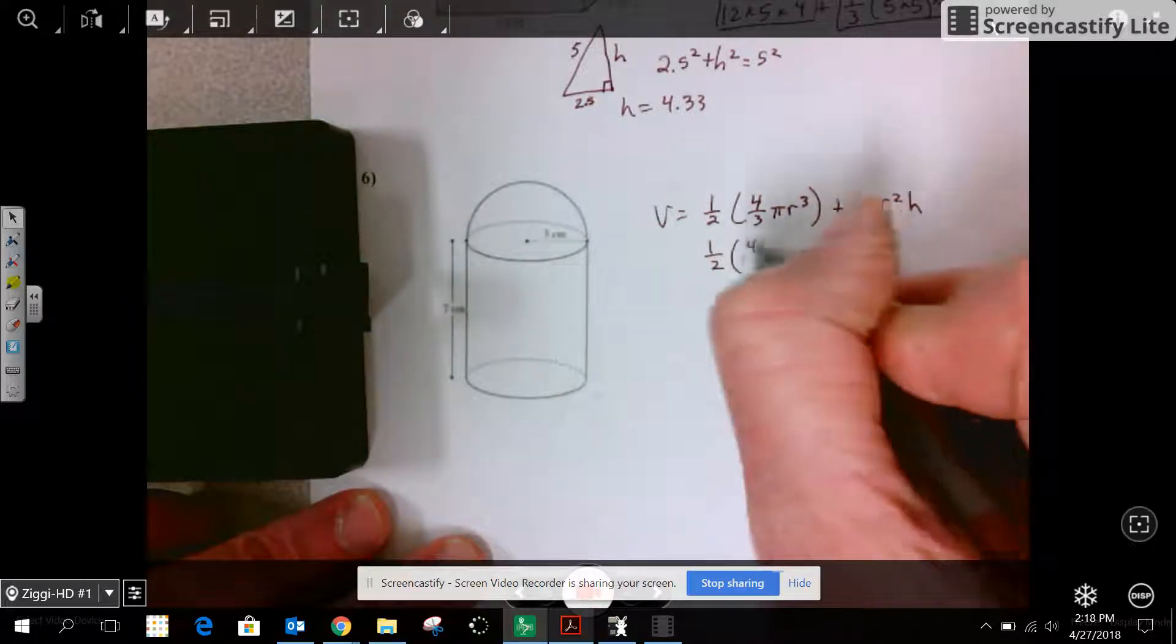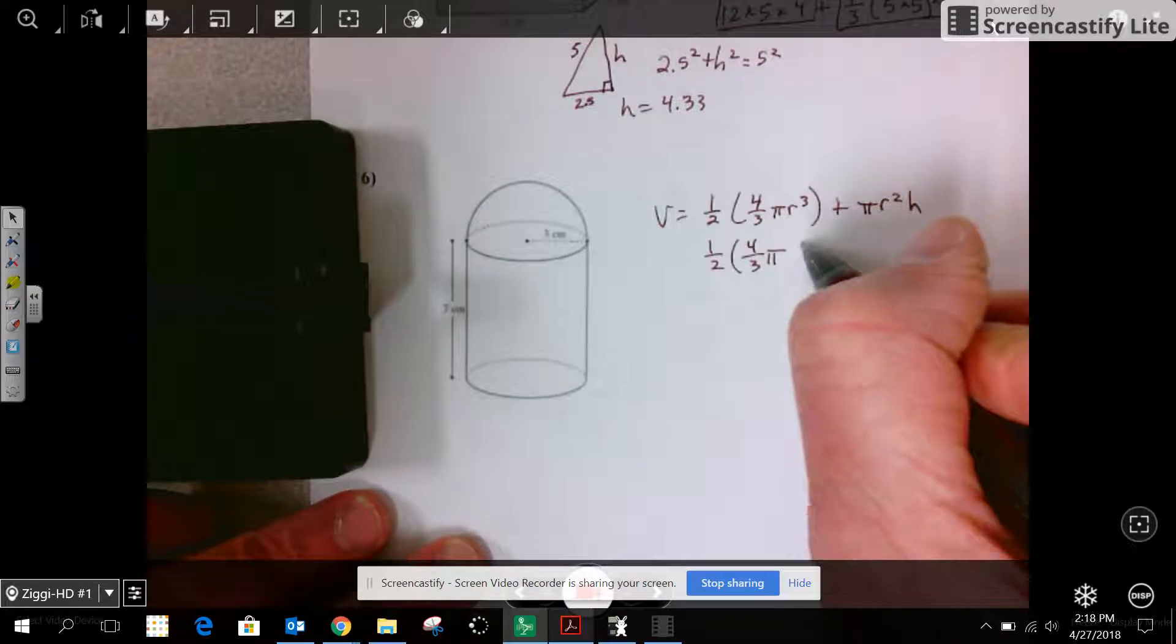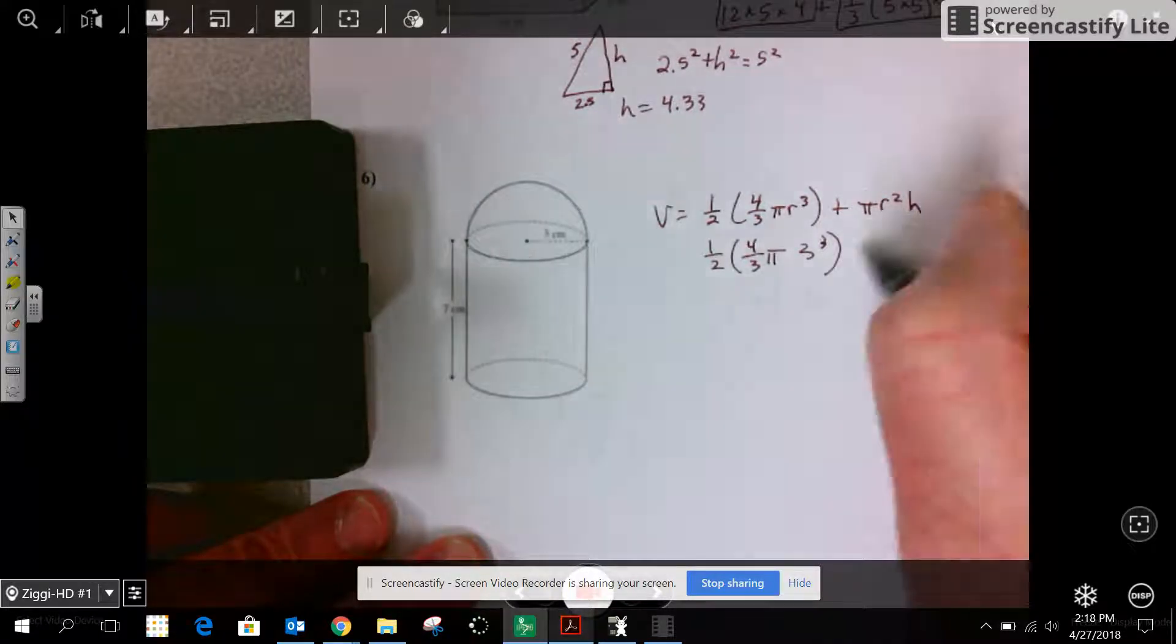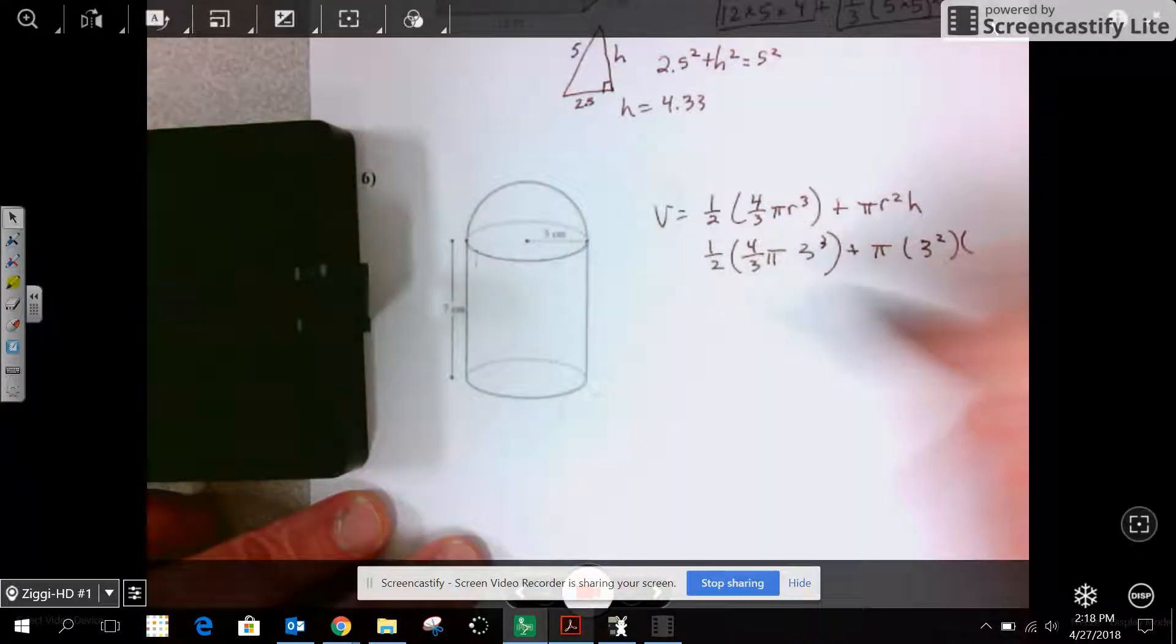So half of four thirds pi, my radius, make sure they give me the radius, 3 cubed plus pi times 3 squared times the height, which is 7.